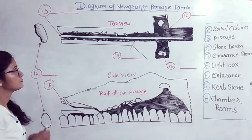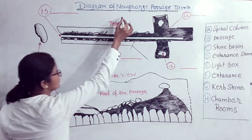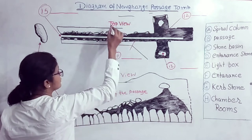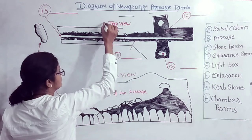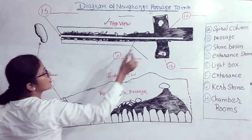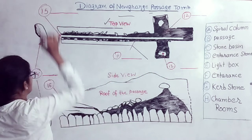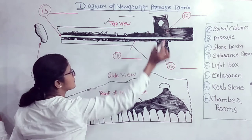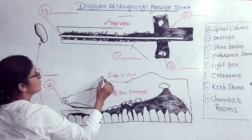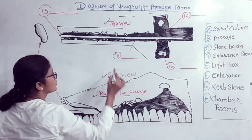Section 2. You will hear a tour guide talking about the Newgrange Passage Tomb in Ireland. First you have some time to look at questions 11 to 16. Pause the recording for 30 seconds. Now listen carefully and answer questions 11 to 16.